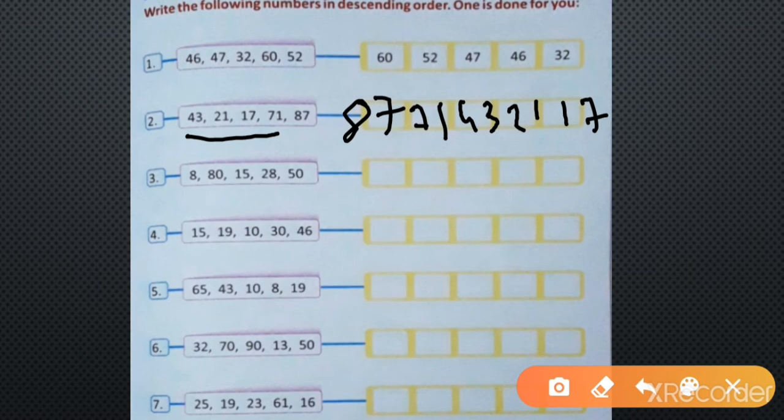Number 3, first look at the numbers: 8, 80, 15, 28, and 50. First find out the biggest number. Which one is biggest? As you have to write in descending order, start with the biggest number. So the biggest number is 80. Then you have to write 80 first.